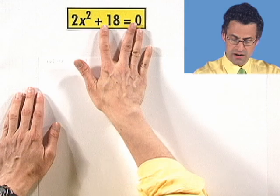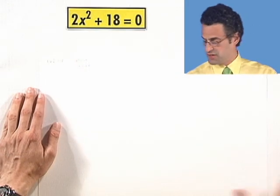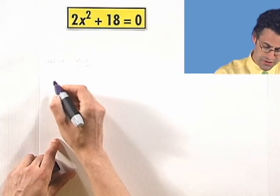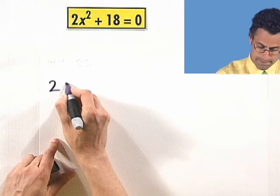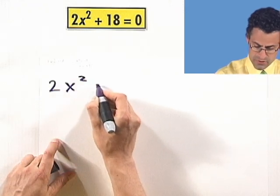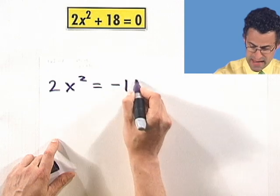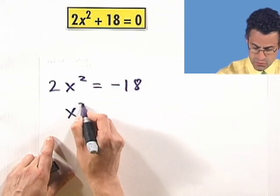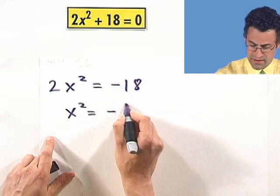2x squared plus 18 equals 0. We can proceed just by trying to isolate the perfect square. 2x squared equals negative 18. So x squared equals negative 9.